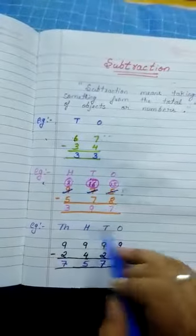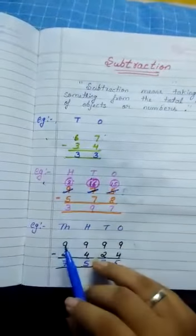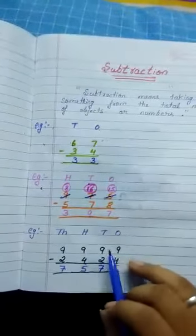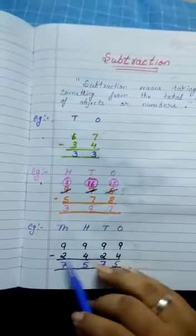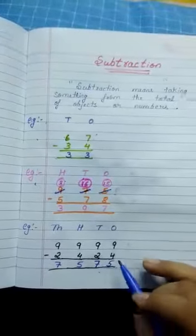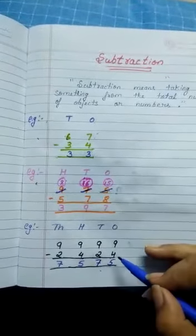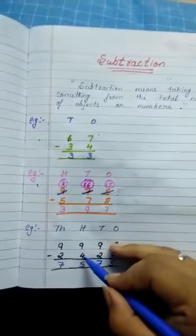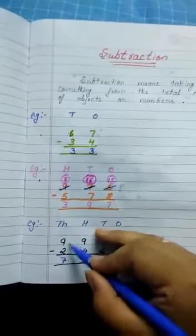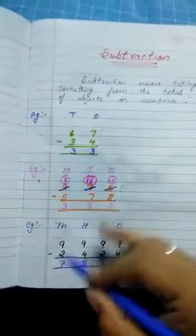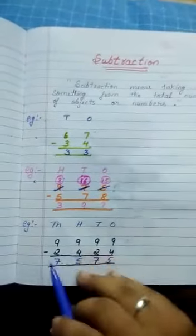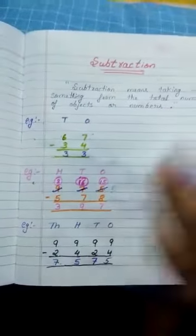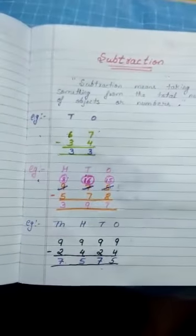And, now we'll see 4 digit number. Thousands, hundreds, tens, ones. 9,999 minus 2,424. Now, we'll subtract. 9 minus 4 equals 5. 9 minus 2 equals 7. 9 minus 4 equals 5. And, 9 minus 2 equals 7. Thik hai? In this way, you will do the next ones. Like, this is 4 digit number. Now, we'll move to 5 digit number, 6 digit number. Same as it is, you will do.